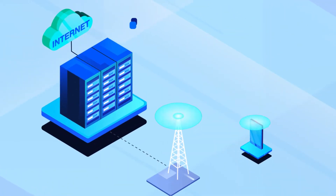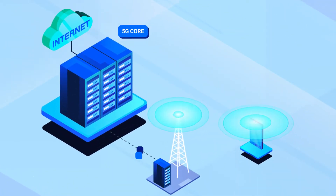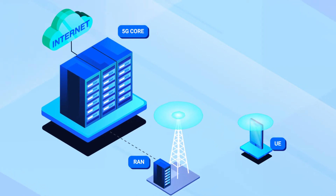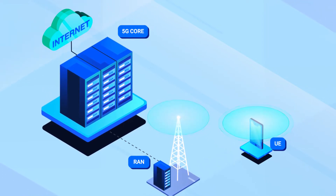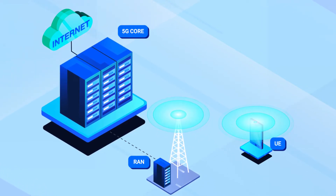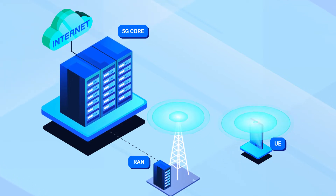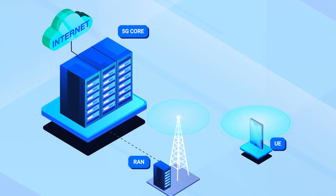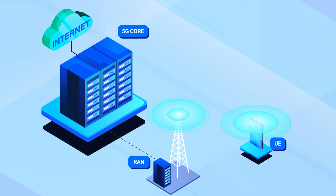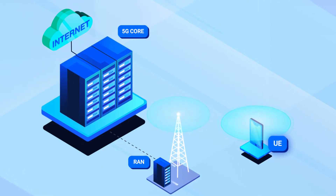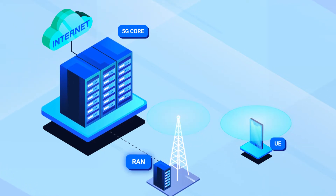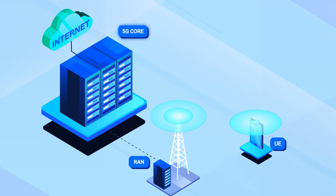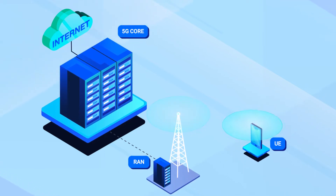3GPP has established a well-accepted reference architecture for a 5G system that offers a solid perspective for evaluation. This simplified network diagram displays the main parts of a 5G system: user equipment, abbreviated UE; 5G radio access network, abbreviated RAN; 5G core; and the data network.